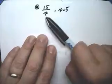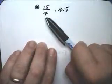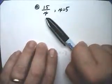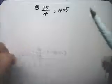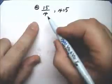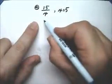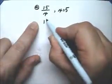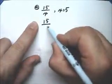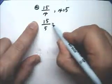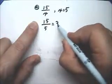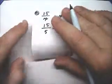First we have to do 15 over x when x equals 5. So this becomes 15 divided by 5, and that answer is 3.